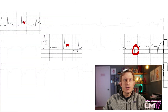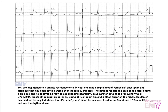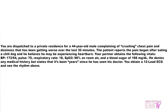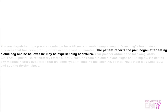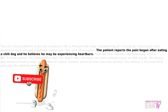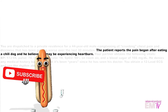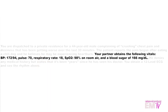Let's go ahead and take a look at the scenario now. We're dispatched to a private residence for a 44-year-old male complaining of crushing chest pain and dizziness that's been getting worse for the last 30 minutes. Patient reports that the pain began after eating a chili dog and he believes he may be experiencing heartburn. Unfortunately, the EKG is showing something a little bit more significant than heartburn. Vital signs: BP 172/94, pulse 70, respiratory rate 18, SpO2 98% on room air, blood sugar 166.